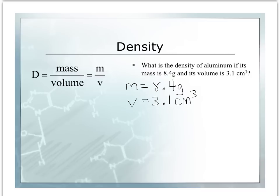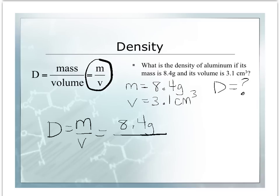You also should write down what you are looking for. We are looking for density. Once you have your givens and what you're looking for, you can look at your equation sheet and see if there is an equation that allows you to use those givens to find the missing variable. Density equals mass divided by volume. So D equals M over V. We plug in our numbers: 8.4 grams divided by 3.1 centimeters cubed. Place this in your calculator.